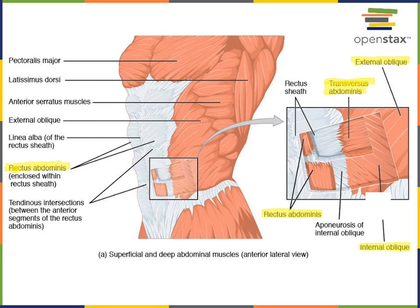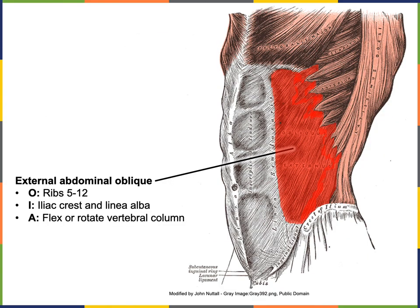The transversus abdominis primarily compresses the abdominal cavity, which functions to protect the abdominal organs and assist with expiration — forcefully breathing air out. As the abdominal cavity is compressed, this leads to decreased volume of the thoracic cavity, helping force air out of the lungs. The external abdominal oblique has an origin from ribs five through twelve and inserts along the midline at a band of connective tissue known as the linea alba.